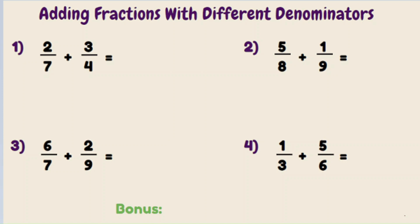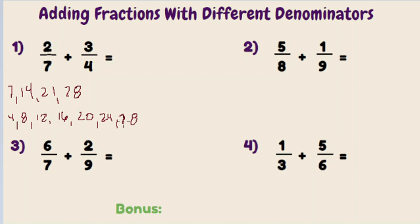So let's look at what are the multiples of seven. Multiples of seven are seven, fourteen, twenty-one, twenty-eight. And then we're going to look at the multiples of four, which are four, eight, twelve, sixteen, twenty-four, twenty-eight. We've now gotten one that is the same for both seven and four, which is twenty-eight.